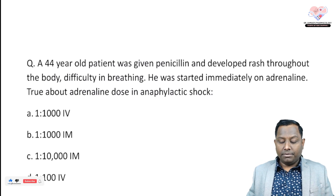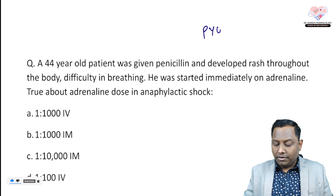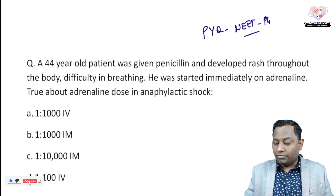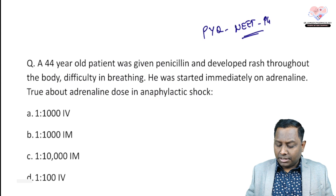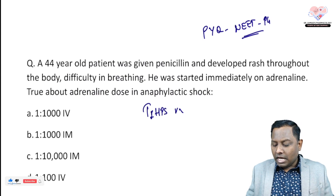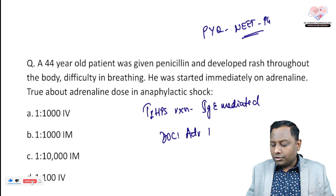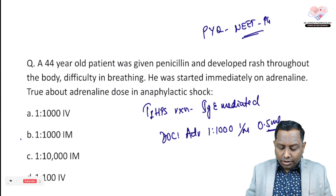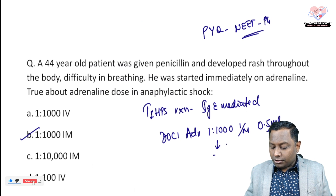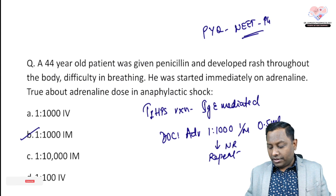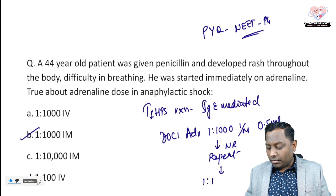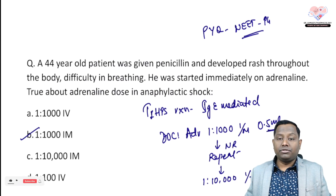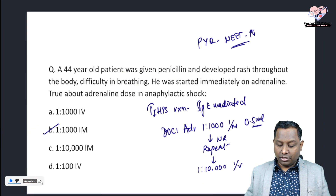The fifth question: a 44-year-old patient was given penicillin and developed a rash throughout the body and difficulty in breathing — started immediately on adrenaline. This is penicillin-mediated Type 1 hypersensitivity (IgE-mediated) anaphylaxis. The drug of choice is adrenaline 1:1000, 0.5 ml intramuscularly. If non-responsive, the same dose can be repeated; if still non-responsive, IV route can be used with 10-times dilution.